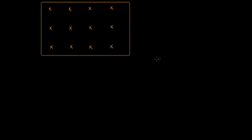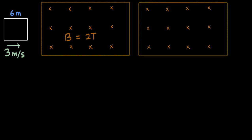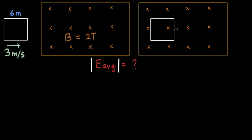In our first example, we have a region of uniform magnetic field with a strength of 2 Tesla. We have a square loop with a side of 6 meters, moving to the right at 3 meters per second. After some time, this loop will completely enter the region of uniform magnetic field. The question is to find the magnitude of the average EMF induced when the loop has fully entered the field. Here, n is just 1 because this is a single square wire, not a coil.